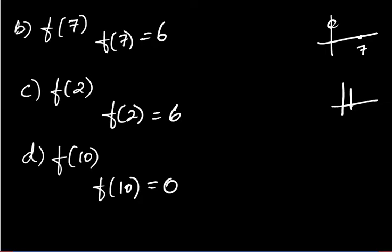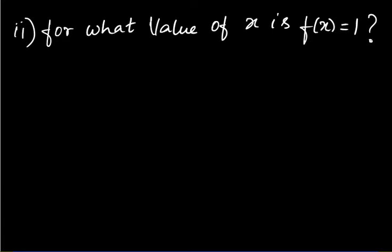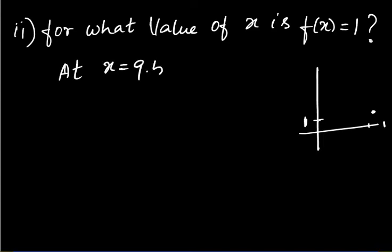Whatever number they give you — f(4), f(5), anything — just look at the graph exactly for that value on your x-axis and find the corresponding y-value. Second question: for what value of x is f(x) = 1? Look at the graph and see the x-value where it coincides with y = 1. It is between 9 and 10, so we take x = 9.5. At x = 9.5, f(x) = 1.